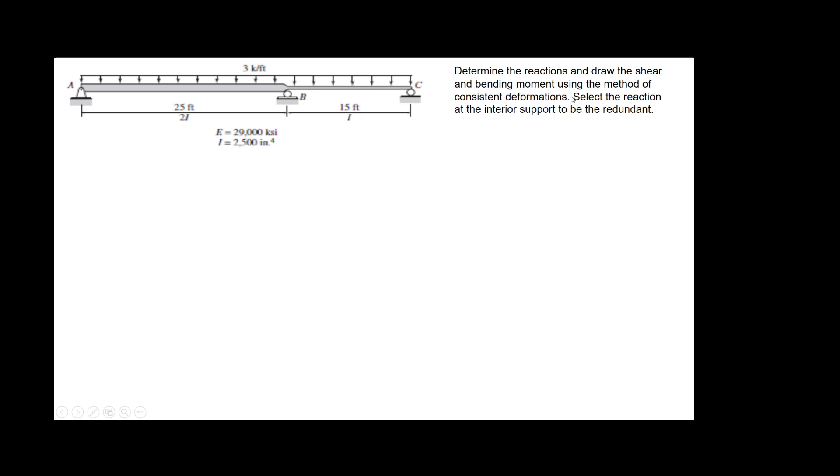There is a condition which shouldn't exist because you should be able to select whatever redundant you want. But the condition is select the reaction at the interior support in order to solve the problem. And you can see here that this section has double the moment of inertia of this section here. So let's do that problem.